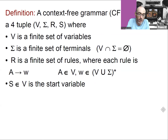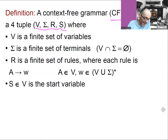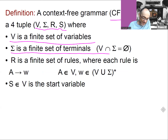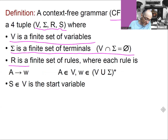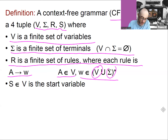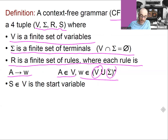Here is now a formal definition of a context-free grammar. A context-free grammar, abbreviated CFG, is a 4-tuple (V, Σ, R, S), where V is a finite set of variables, Σ is a finite set of terminals — this is the input alphabet over which your language is defined — R is a finite set of rules where each rule is of the type A → W, where A is a variable and W is some combination of variables and terminals, i.e., an element of (V ∪ Σ)*. And S is a specific variable in V which is the start variable.